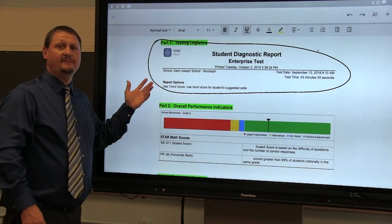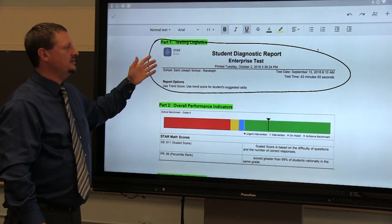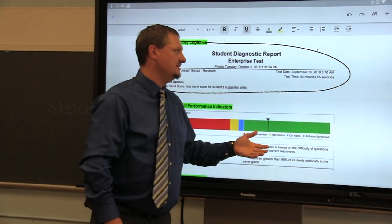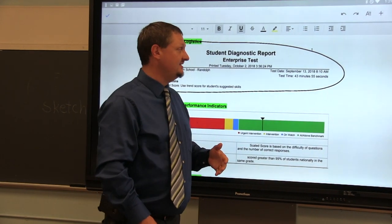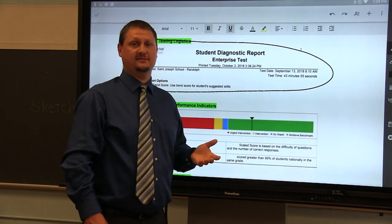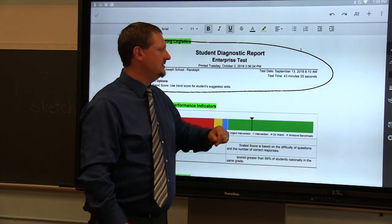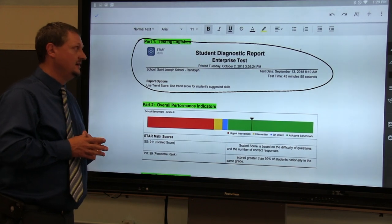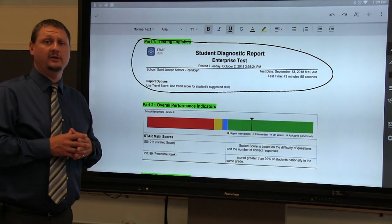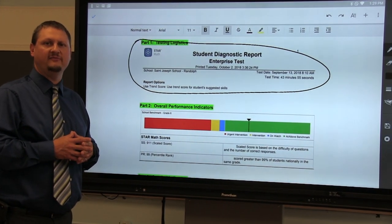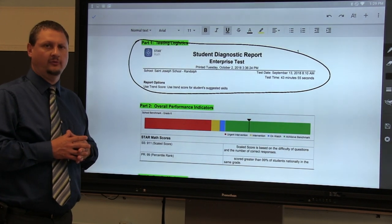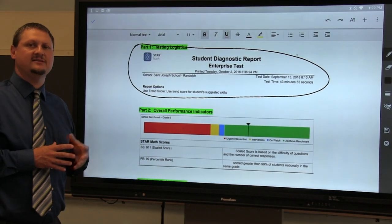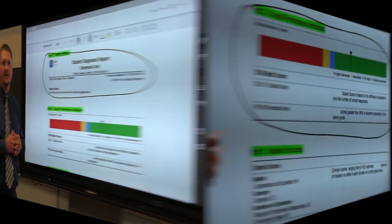You'll notice that this is a STAR math assessment now. It has the same logistical information at the top but notice when compared to the reading assessment the student we looked at before took 16 minutes and some odd seconds to finish the test. This student on the math assessment took 43 minutes and 55 seconds to complete this test. In general that's a little bit longer to complete a math test than the average again 20 to 25 minutes on task is about what we look for. However as we look more at this report we can understand there's a reason why this student took 43 minutes on this particular test.